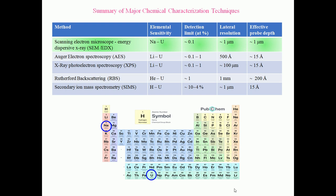Energy dispersive analysis by X-rays is a chemical characterization technique. There are four major chemical characterization techniques: EDAX (EDS), AES (Auger Electron Spectroscopy), XPS (X-ray Photoelectron Spectroscopy), RBS (Rutherford Backscattering), and SIMS (Secondary Ion Mass Spectrometry). One major disadvantage of the EDS technique is that we can only detect elements from sodium (atomic number 11) to uranium (atomic number 92). Elements with Z less than 11 cannot be detected.